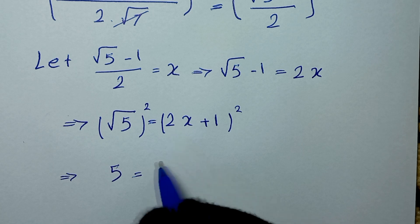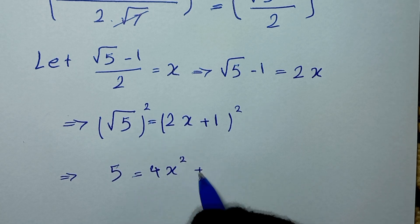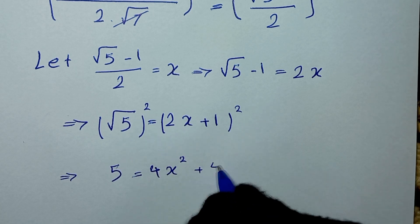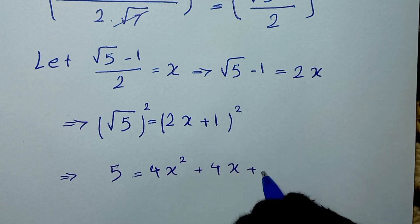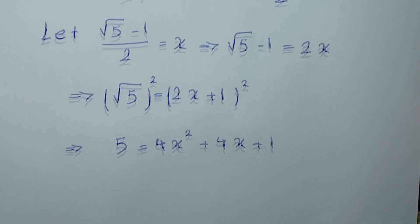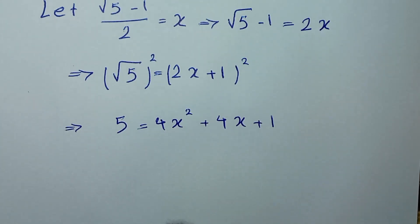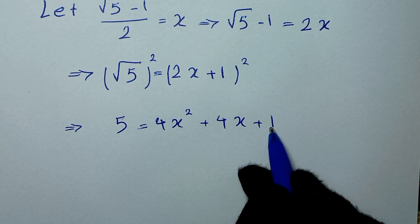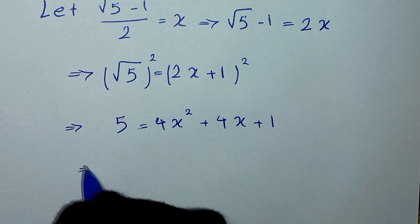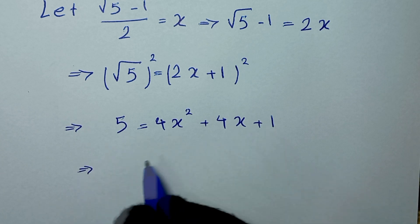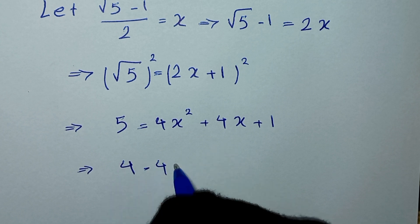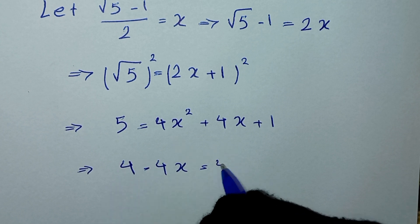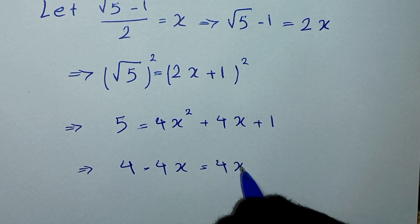Squaring both sides, 5 equals (2x+1)², which expands as 4x² plus 2 times 2x, which is 4x, plus 1. In the next step we rearrange: 5 minus 4 minus 4x equals 4x².